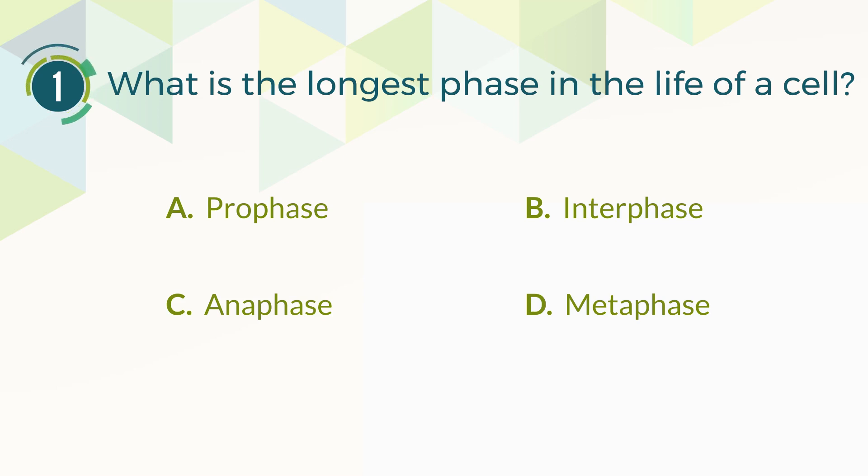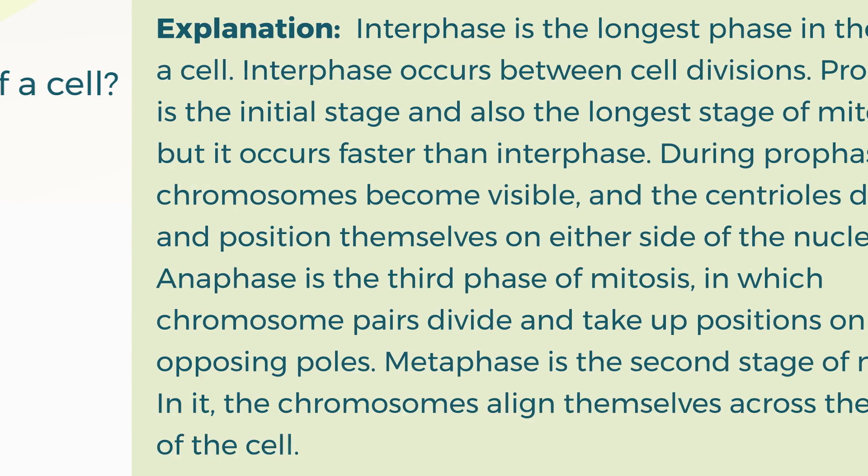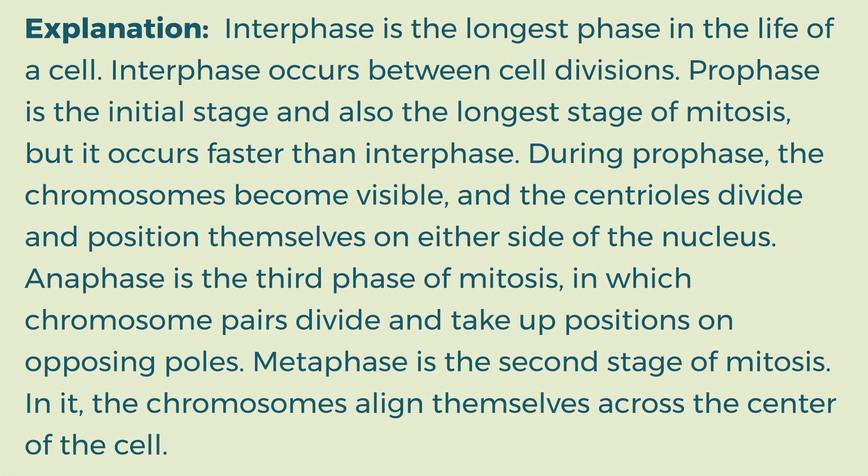The correct answer is B. Interphase. Explanation: Interphase is the longest phase in the life of a cell. Interphase occurs between cell divisions. Prophase is the initial stage and also the longest stage of mitosis, but it occurs faster than interphase. During prophase, the chromosomes become visible, and the centrioles divide and position themselves on either side of the nucleus. Anaphase is the third phase of mitosis, in which chromosome pairs divide and take up positions on opposing poles. Metaphase is the second stage of mitosis, in which the chromosomes align themselves across the center of the cell.